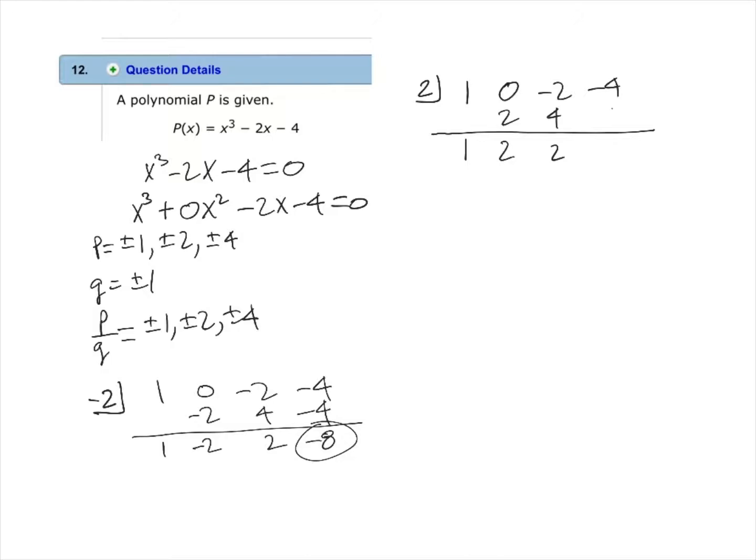Add and we have 2. Multiply 2 times 2. We have 4. Add and we have 0. So by finding this 0 in this last position, we know that we have found a factor for the polynomial. Or in other words, we have found a root and this root would be 2.